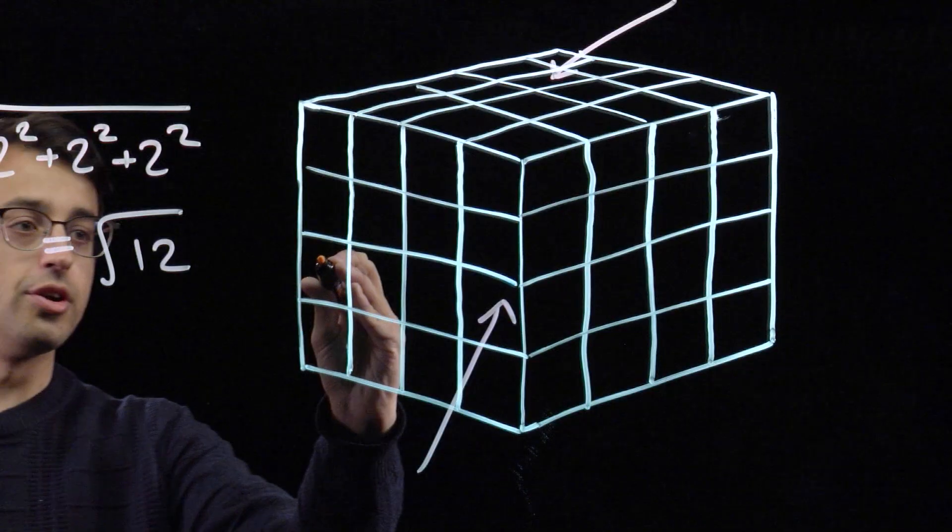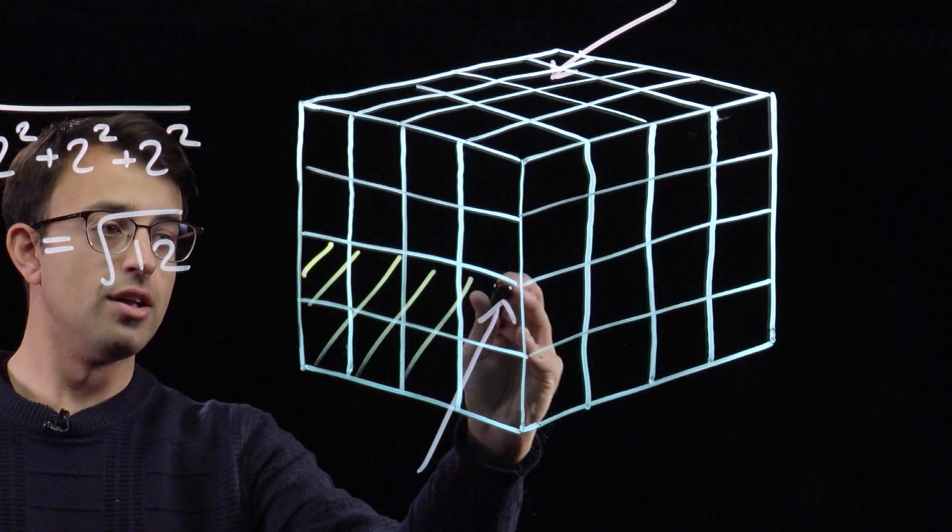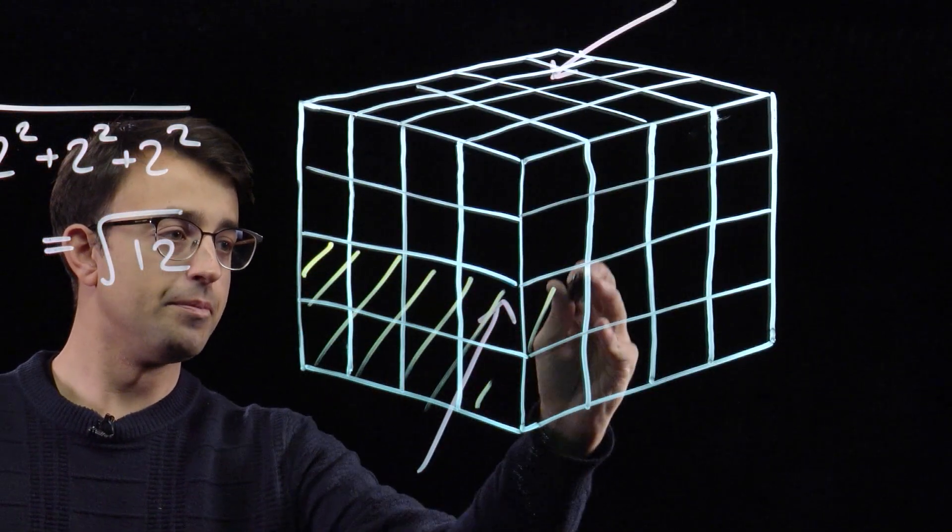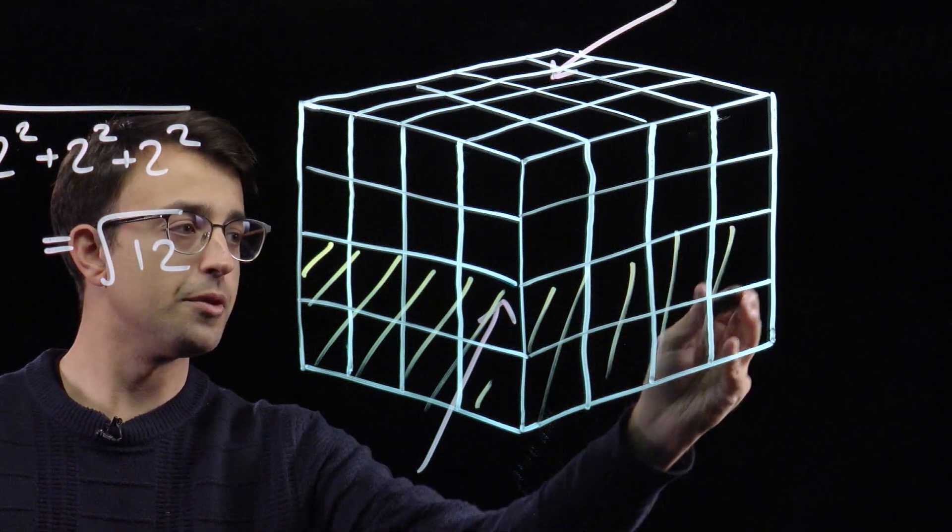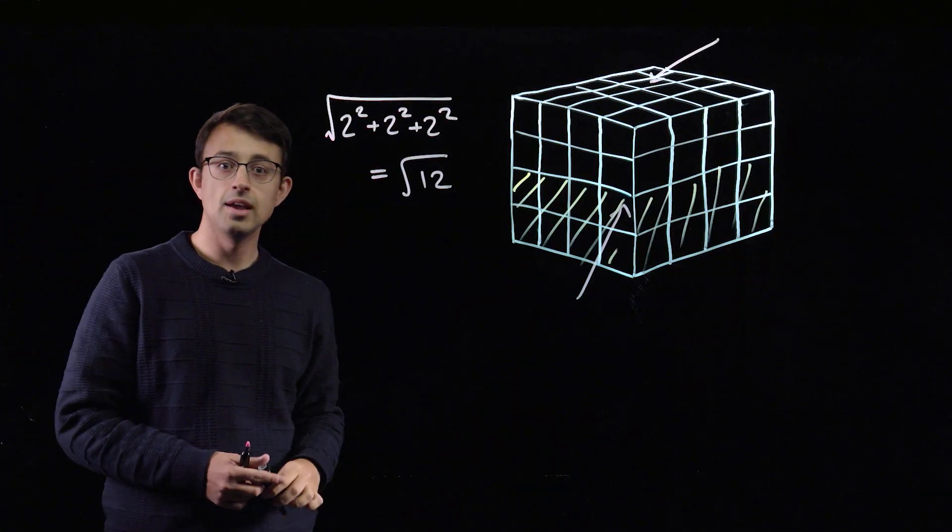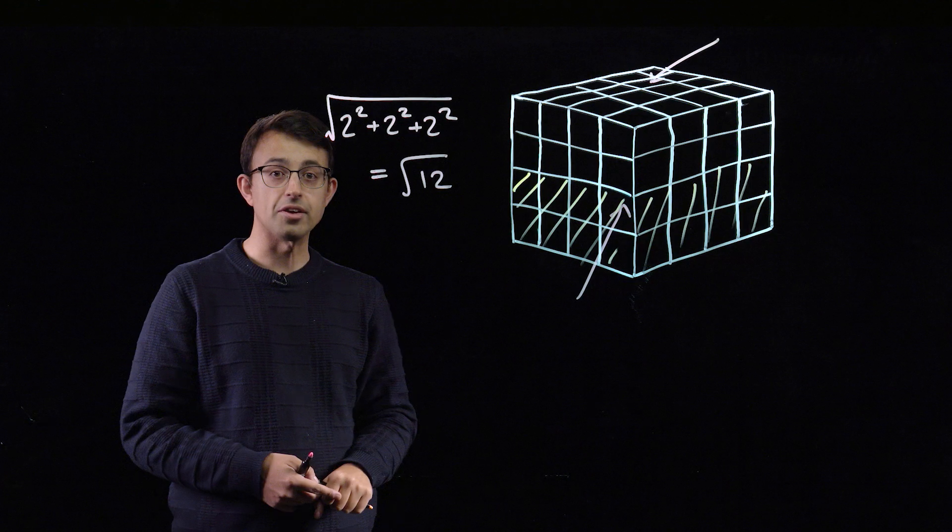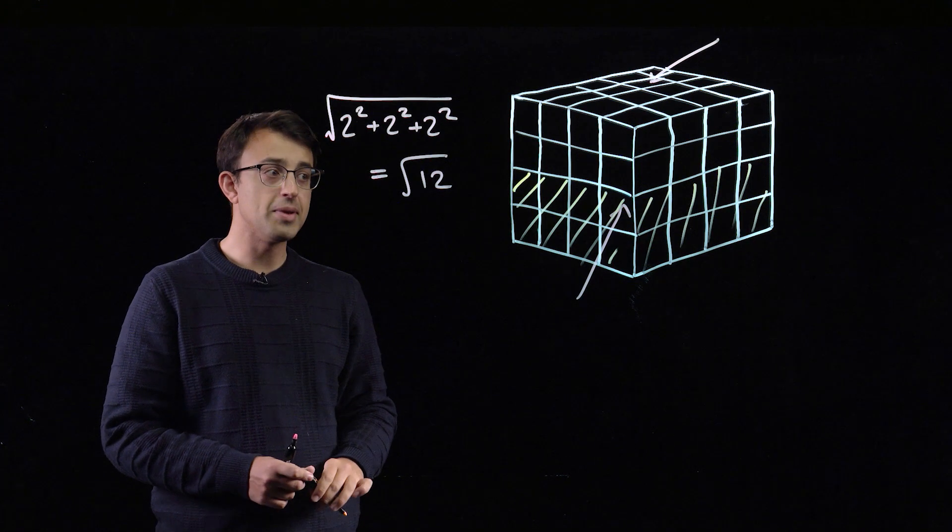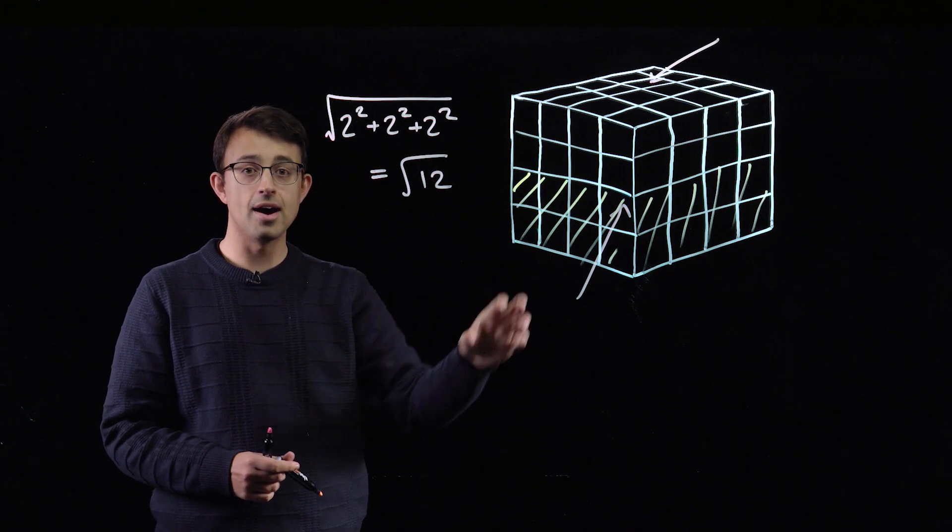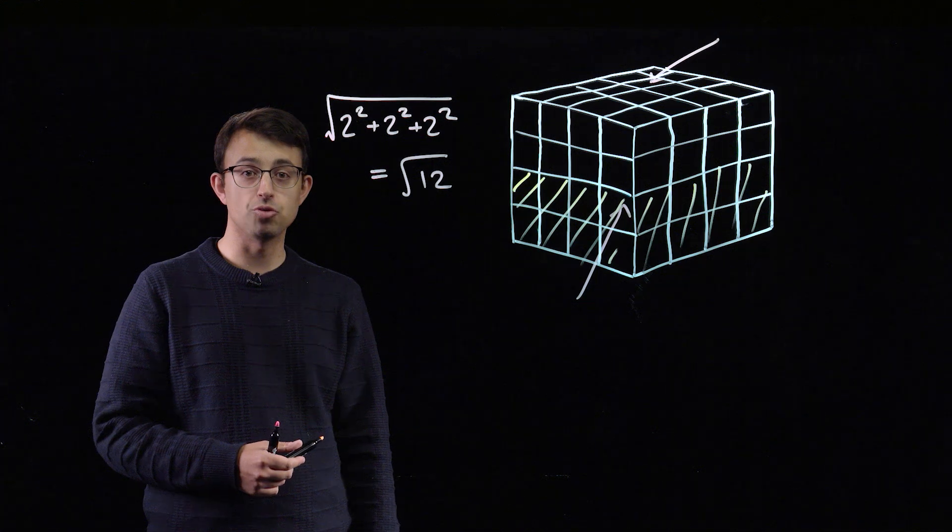One option is to assign the Demerara flavour to the bottom half and keep the top half white. This means that whenever we take a pair that's distanced the square root of 12 apart,